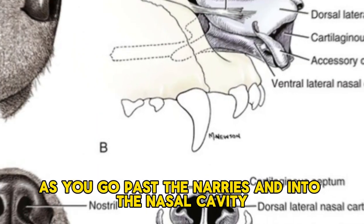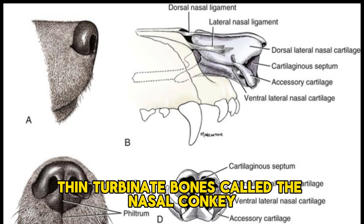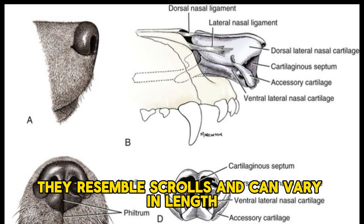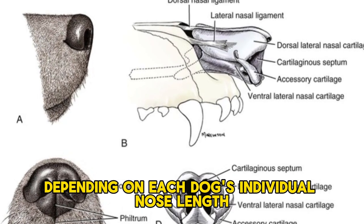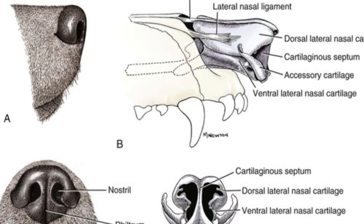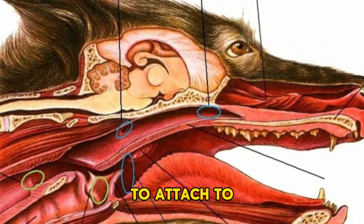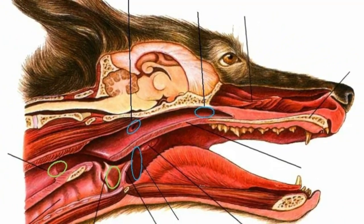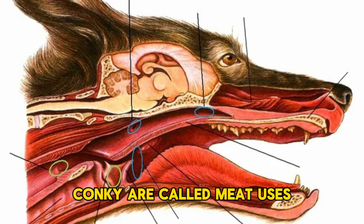As you go past the nares and into the nasal cavity, thin turbinate bones called the nasal conchae are present. They resemble scrolls and can vary in length depending on each dog's individual nose length. These areas allow for nasal cells to attach to, as well as provide a large surface area for air to pass through. These voided passageways of space in between conchae are called meatuses.